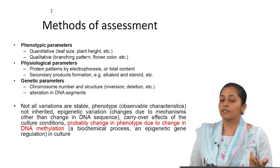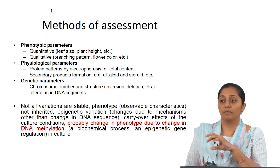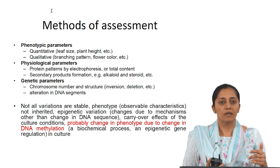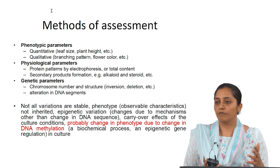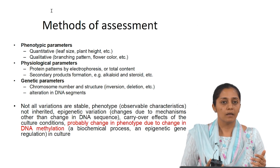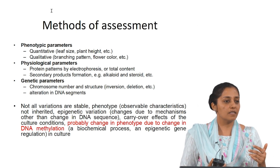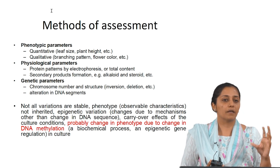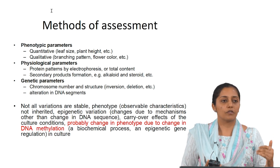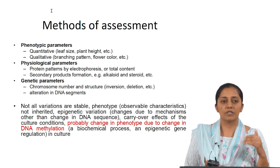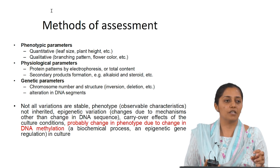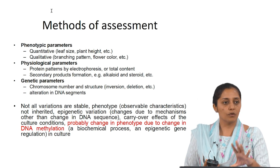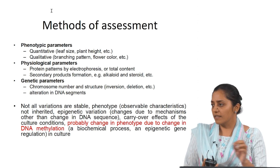What are the methods of assessment? How will you know that a somaclonal variation has possibly occurred in the culture? There can be three methods. First, you will see a change in phenotypic parameters. In phenotypic parameters there can be two ways — quantitative and qualitative. Quantitatively, people measure plant height during clonal propagation; you should see similar phenotypic parameters, but if you see a change in leaf size, plant height, or internodal length, that is an indication. Qualitatively, for example, changes in flowering patterns or color change.